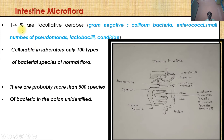Generally, 1 to 4% are facultative aerobes present in the intestine, including gram-negative coliform bacteria, enterococci, small numbers of Pseudomonas, lactobacilli, and Candida, which are non-pathogenic and present in very small numbers as facultative aerobes inside the gastrointestinal tract.